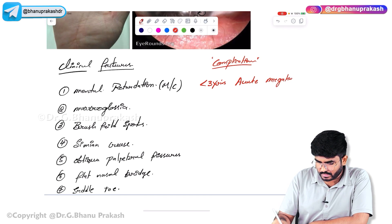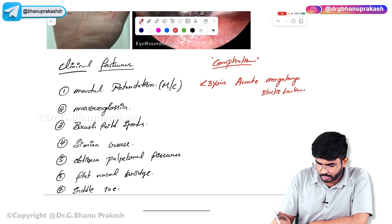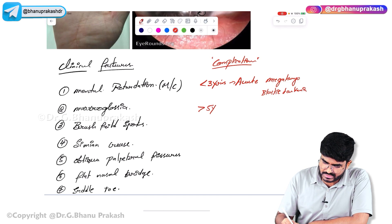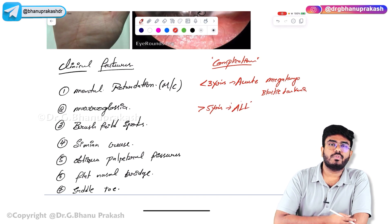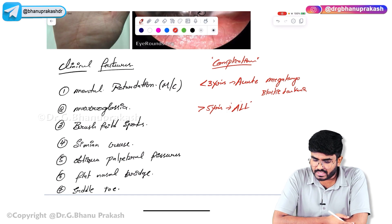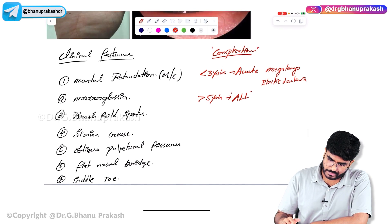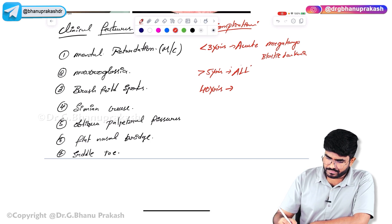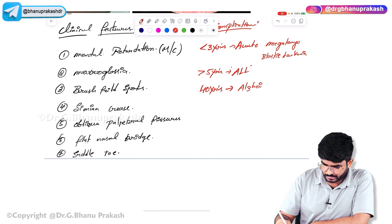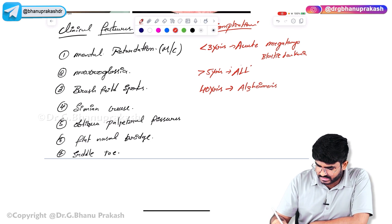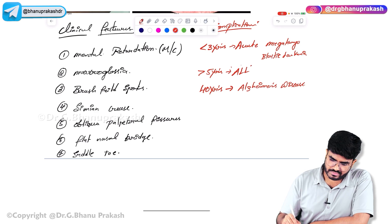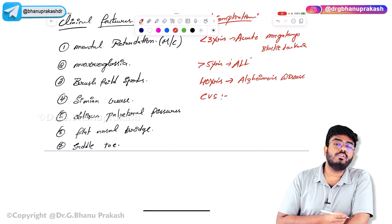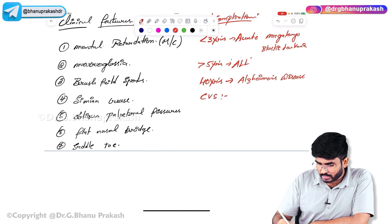After five years, the risk is acute lymphocytic leukemia (ALL). By 40 years of age, almost all Down syndrome patients will develop Alzheimer's dementia. There are also cardiovascular abnormalities — specifically endocardial cushion defects.